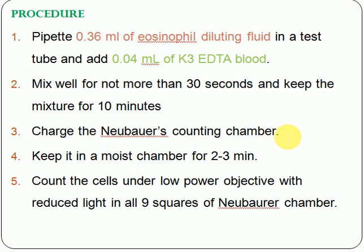After charging the Neubauer chamber, keep it in a moist chamber for two to three minutes. The purpose of using a moist chamber is to prevent evaporation of the fluid. After two to three minutes, count the cells under the low power objective with reduced light — that means you need to close the diaphragm.